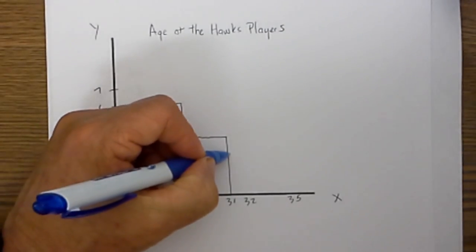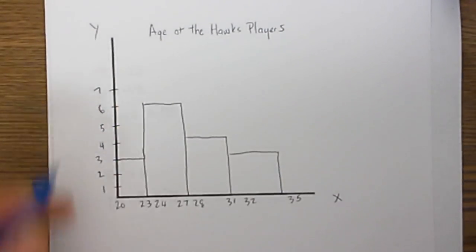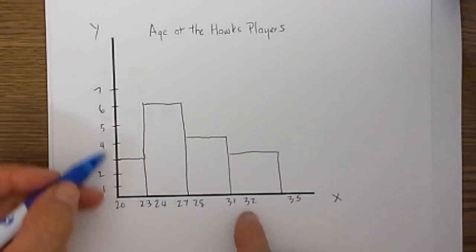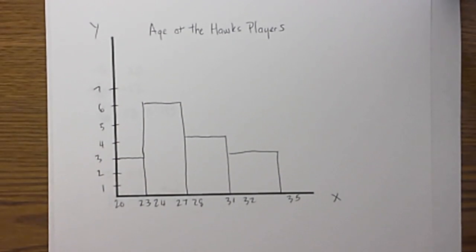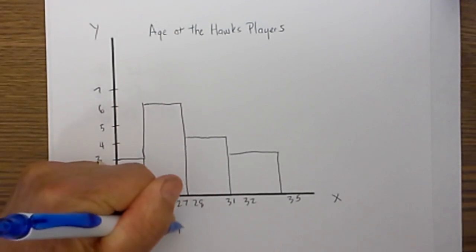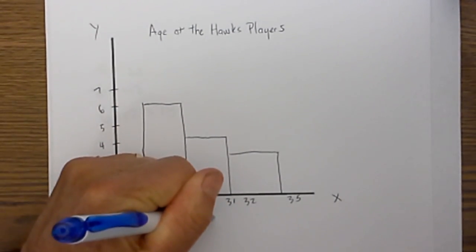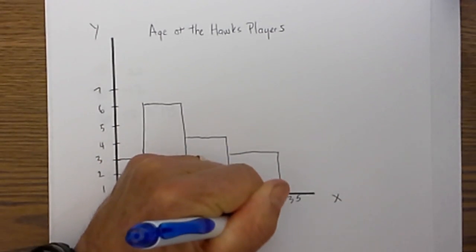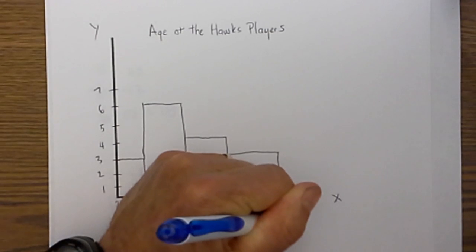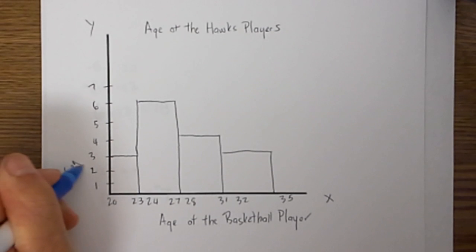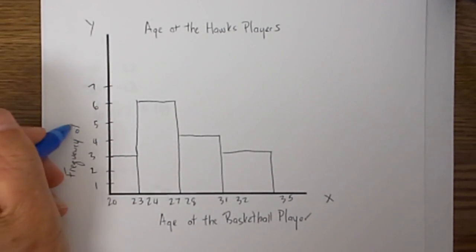And now I need to label the axis, so I have almost forgotten to do that. This is the age of the basketball player, and then this would be the frequency of players age.